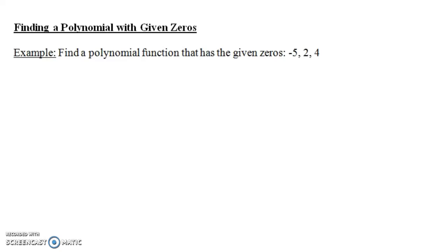In this video, we're going to talk about finding a polynomial with given zeros. In this first example, it says find a polynomial function that has the given zeros, and the zeros are -5, 2, and 4.